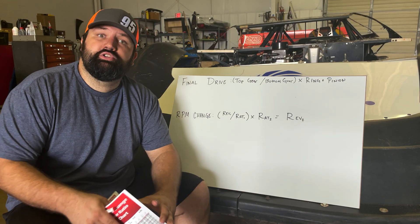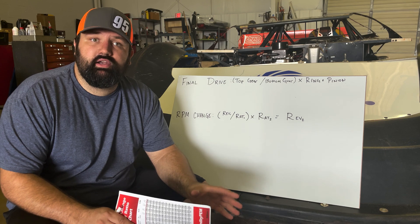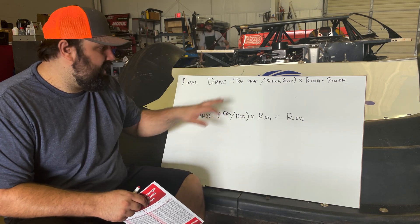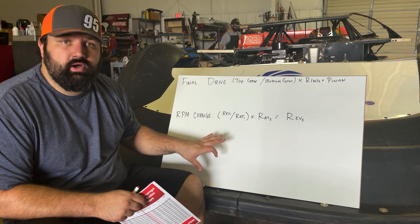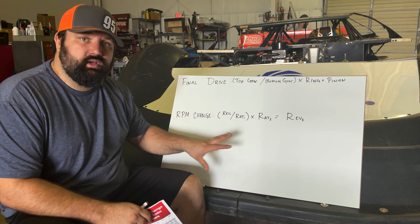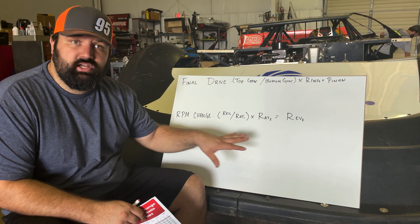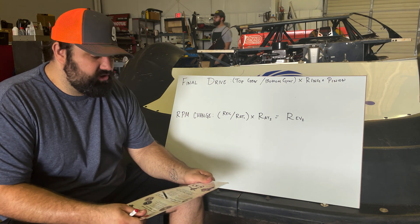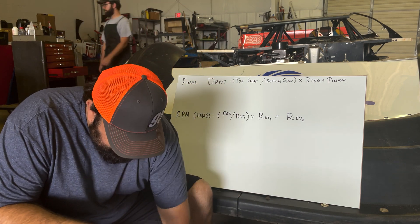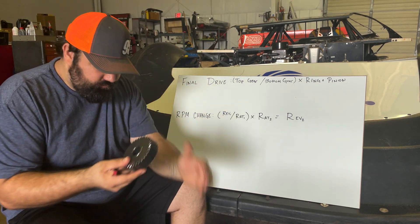If you saw our short from the other day, we talked about calculating final drive. We're going to start with that, then talk about RPM change and how we pick a gear — maybe while we're at the racetrack if we need to change gears. We're going to start out using set three as an example for today's video.